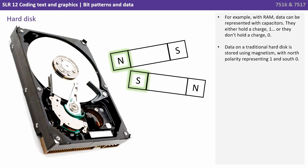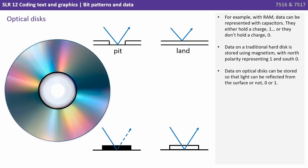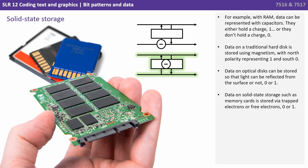Data on traditional hard disks is stored using magnetism, using either north polarity representing 1 and south representing 0. Data on optical disks can be stored so that light can be reflected from the surface or not — again, 0 or 1. And data on solid state storage, such as memory cards, is stored via trapped electrons or free electrons — again, 0 or 1.